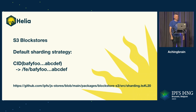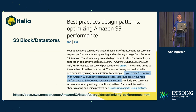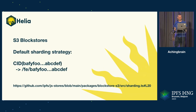If you create 10 prefixes, you can do 55,000 reads per second. So 5,500 times 10 is a fairly linear thing. Now the S3 block store has learned from this, and it applies a default sharding strategy of just taking the last two letters of the path, reversing them, and sticking them on the front. You can override these settings when you create your block store. You should measure everything before making decisions.